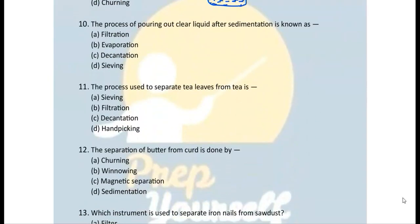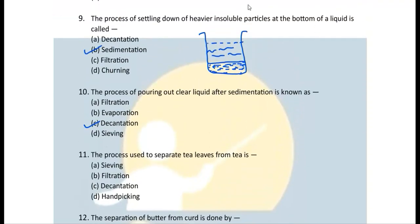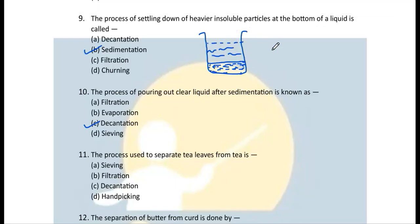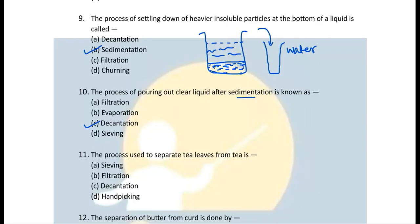Question 10: The process of pouring out liquid after sedimentation is called decantation. After sedimentation, you pour the liquid into a clean container — sand is left behind and you get the water. This process of separating sand and water is called decantation, and it is done after sedimentation.